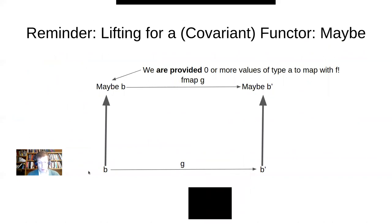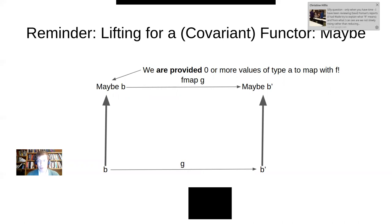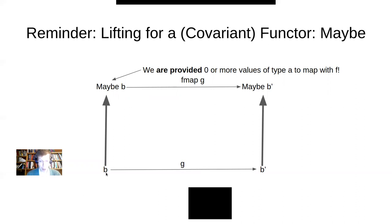Let's go back to basics and review the essential components of mapping with functors. Functors map objects to objects — for example, mapping B to Maybe B, or B prime to Maybe B prime. But functors do more: they map morphisms. Within the context of mapping morphisms, we speak about lifting them — like lifting G from going between object B and B prime, to instead going from Maybe B to Maybe B prime.